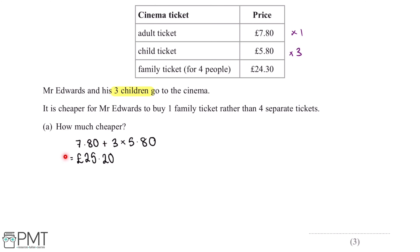Now this is the price of buying four separate tickets. However, we want to work out how much cheaper it is to buy a family ticket. So we'll want to work out the difference between the prices of a family ticket and the prices of the separate tickets. So we can do £25.20 minus £24.30, and this gives us an answer of £0.90.